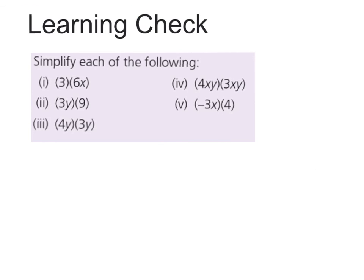Today's learning check is to simplify each of the following. Remember as soon as you see brackets that means multiply. So it's 3 multiplied by 3x, 3y multiplied by 9, 4y by 3y, 4xy by 3xy, and minus 3x multiplied by 4.